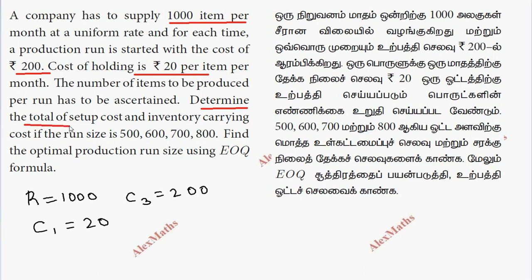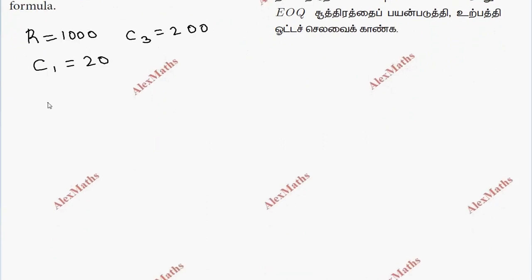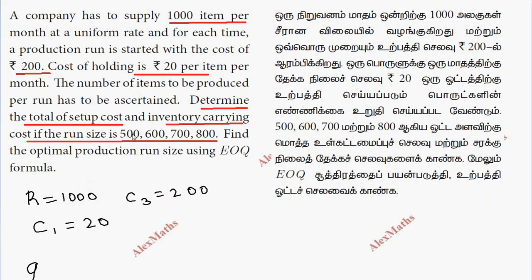Determine the total of setup cost and inventory carrying cost if the run size is 500, 600, 700, 800. So for one run size, we need to find setup cost and inventory carrying cost. The quantities are 500, 600, 700, 800.